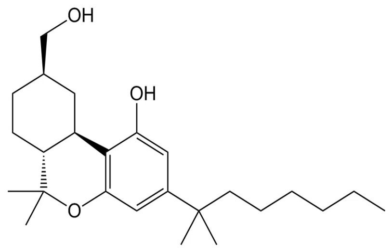Structural classes include but are not limited to: A) 2-(3-hydroxycyclohexyl) phenol with substitution at the 5 position of the phenolic ring by alkyl or alkanol, whether or not substituted on the cyclohexyl ring to any extent. B) 3-(1-naphthoyl) indole or 3-(1-naphthyl) indole with substitution at the nitrogen atom of the indole ring, whether or not further substituted on the indole ring to any extent, whether or not substituted on the naphthoyl or naphthyl ring to any extent.